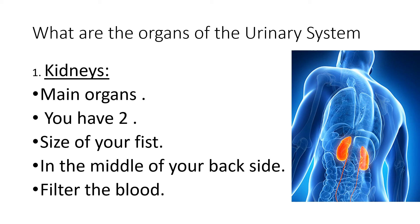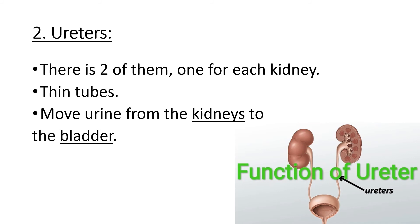Without blood being filtered, the body wouldn't be able to survive because it would be full of toxic material. The ureters are also parts of the urinary system — you have two of them, one for each kidney: a right ureter and a left ureter. They are thin tubes. Once urine is made in your kidneys it can't stay there; it needs to be collected in the bladder. So urine moves down the ureters — thin tubes that carry urine from the kidneys into the urinary bladder.